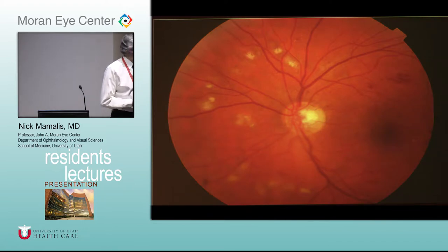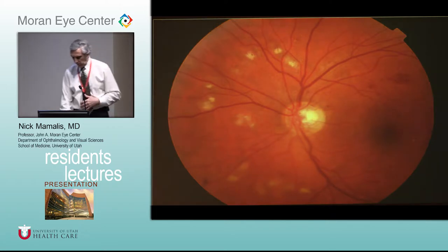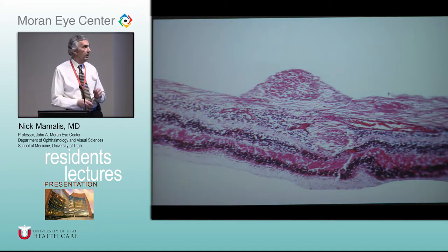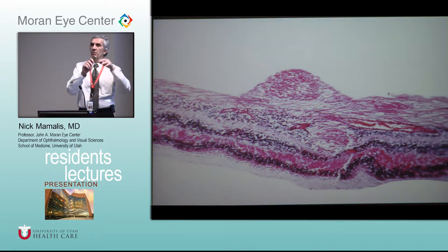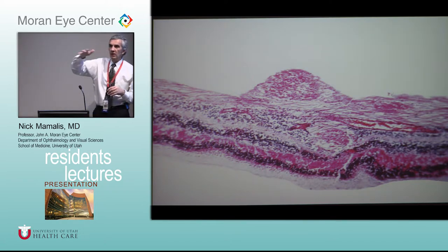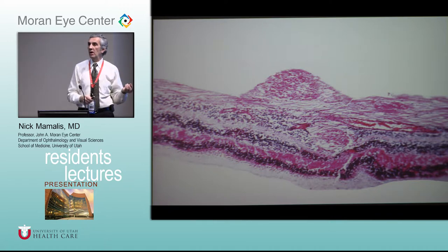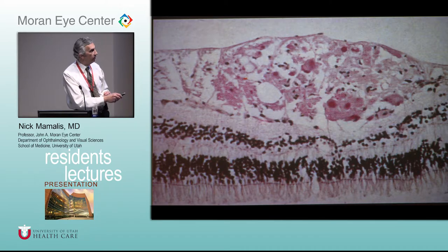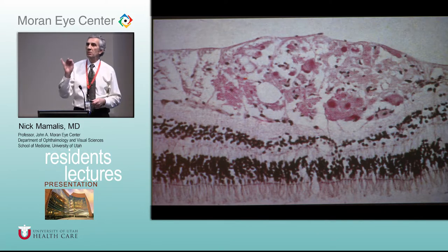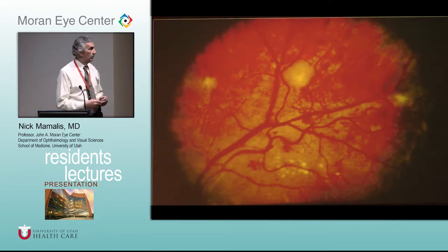What do we see in here? Cotton wool spots. What causes those? Ischemia of the nerve fiber layer. Here we have the nerve fiber layer — you get some focal ischemia, all those ganglion cells get swollen, and you get that wispy cotton wool look because it's in the very surface layer. These can come and go because as the ischemia goes away you're left with a little dead spot — but it won't be swollen; it's the swelling that you see. That's a sign of pre-proliferative retinopathy.